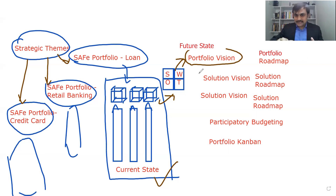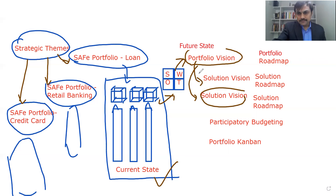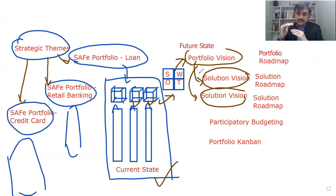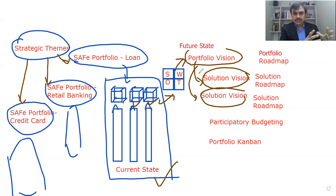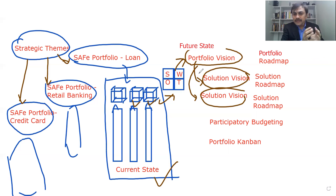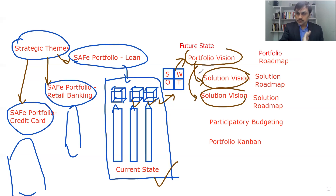This Portfolio Vision impacts the Solution Visions which are under this particular portfolio. You may have some ongoing solutions where the vision needs to be adjusted and the work they are doing needs to be realigned, because now we are looking at a particular strategy. Or, based on new strategic information, we may generate entirely new solutions. There could be a new initiative which was not in place before, but new solutions need to be developed. So we may have additions or adjustments of solutions — and the Portfolio Vision influences the Solution Vision.